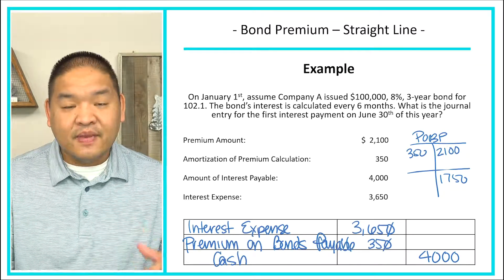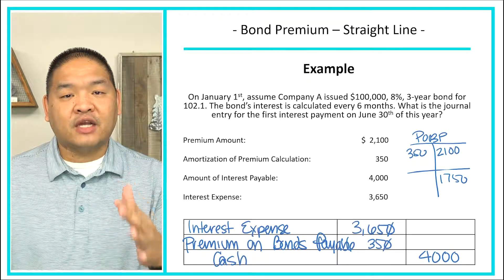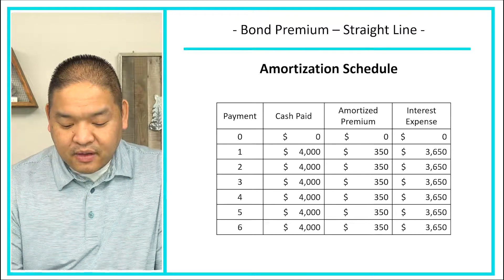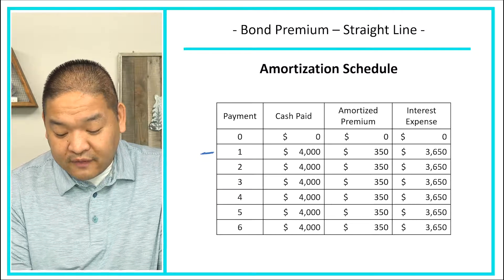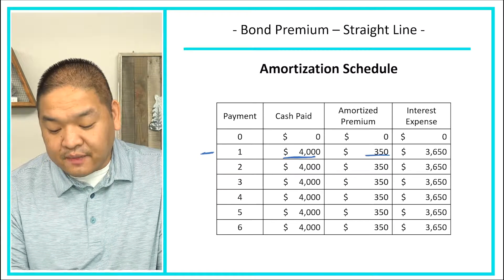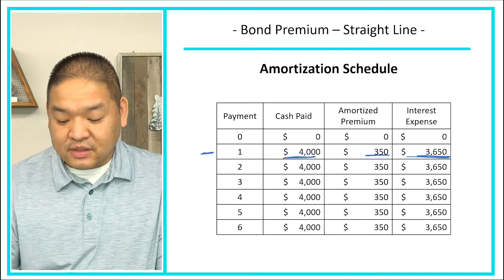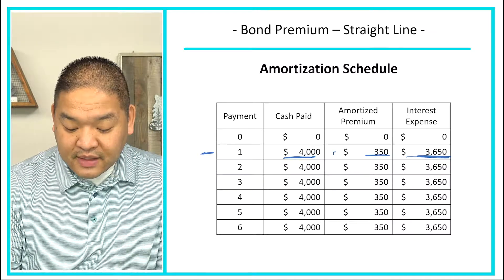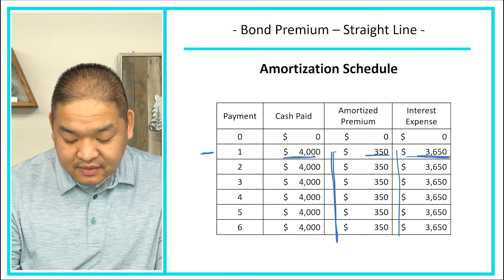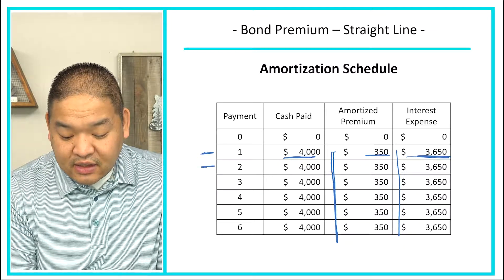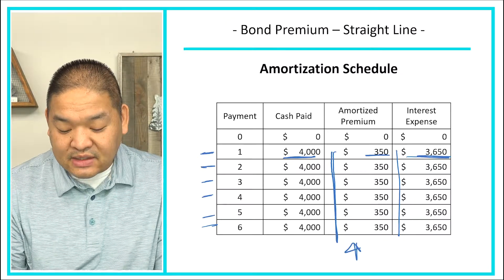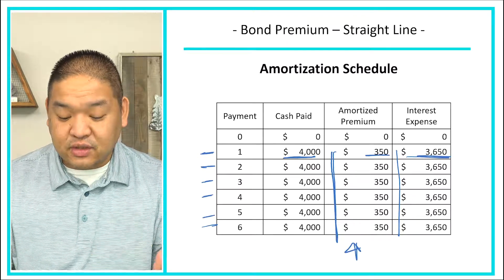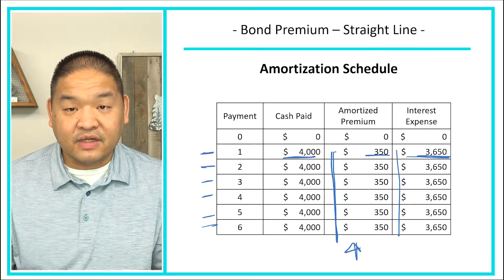Let me show you an amortization schedule for the next three years. That first payment is what we just did: we paid $4,000, amortized $350, and interest expense was $3,650. In the next payment we do the same thing. Because it's straight line, the amortized premium is the same every period, which means interest expense is the same — $3,650 — throughout the entire schedule.